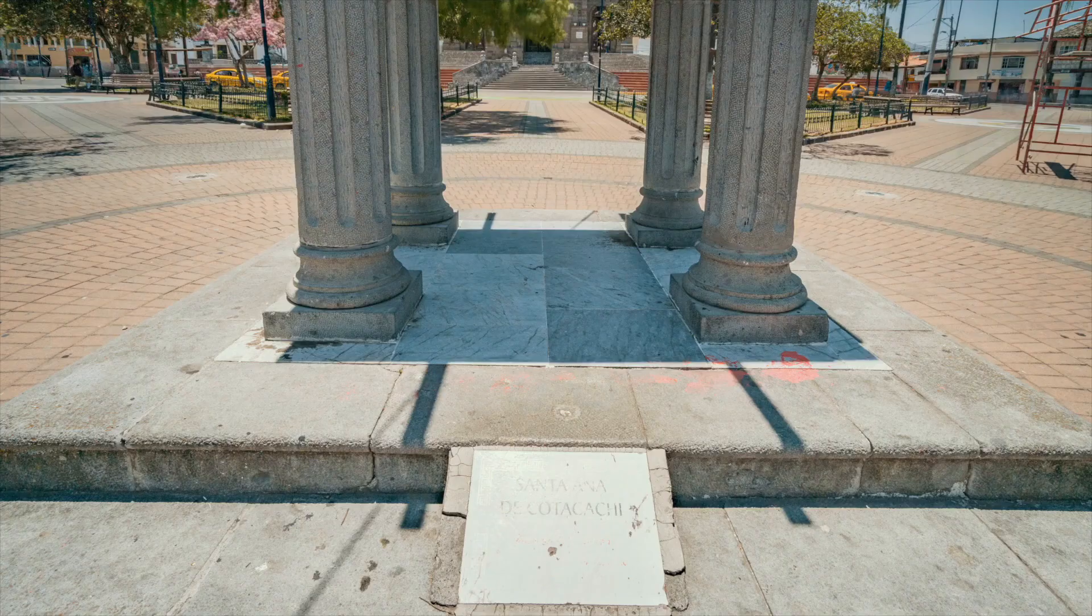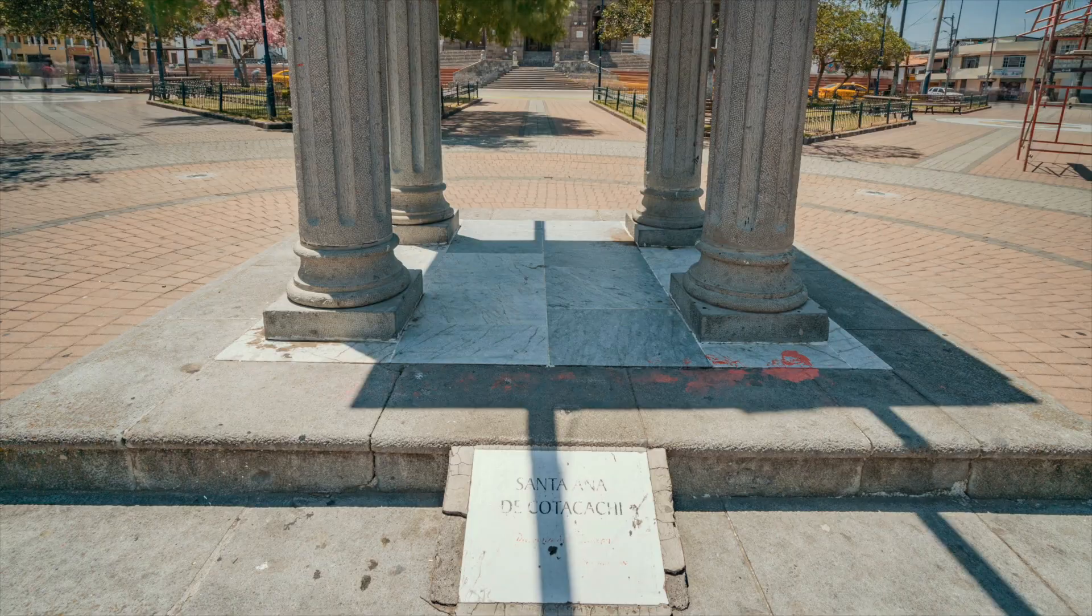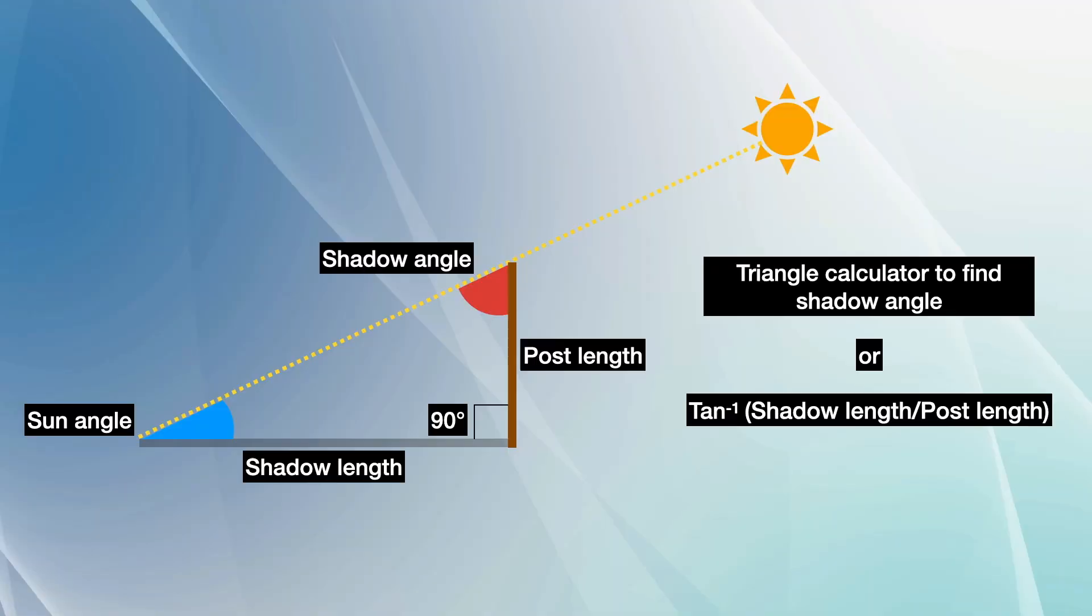When the sun is at its highest point for the day, that is when shadows will be at their shortest length. When it's solar noon, measure the length of the sun's shadow from the post along with the measurement of the post. With the 90 degree angle between them, you can find the shadow angle by either using an online triangle calculator or the equation shown below.